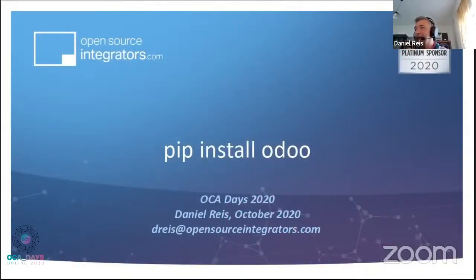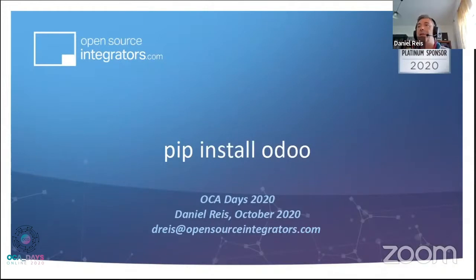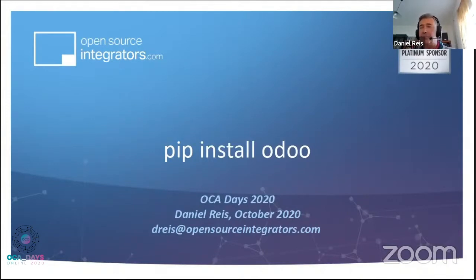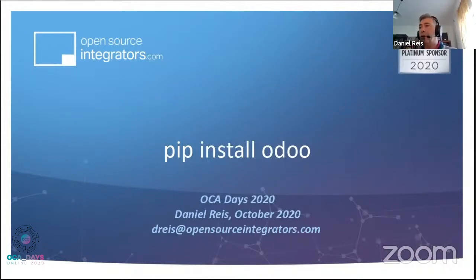Let me introduce myself. I'm Daniel Race. I currently work as a consultant at Open Source Integrators. I'm leading the European office — that's a US-based company that just won the prize for best North America partner. I've also been involved in the Odoo community since its beginning, and I'm currently a board member at the OCA.